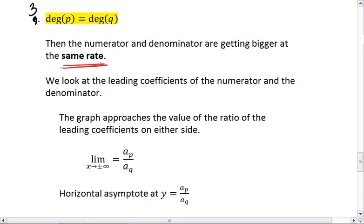If they're both quartic polynomials, we have an x to the fourth and an x to the fourth, then they're getting larger just as fast as one another.